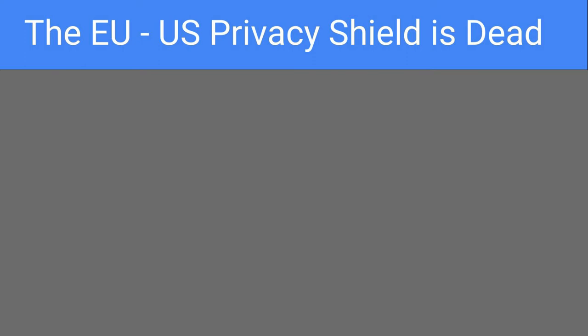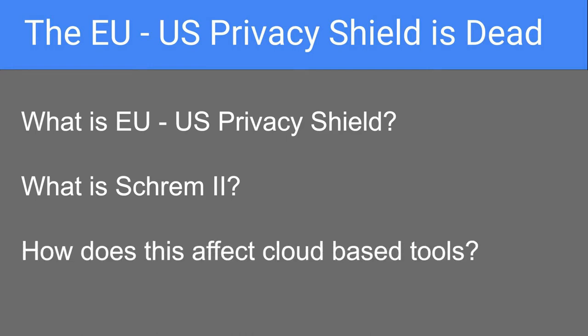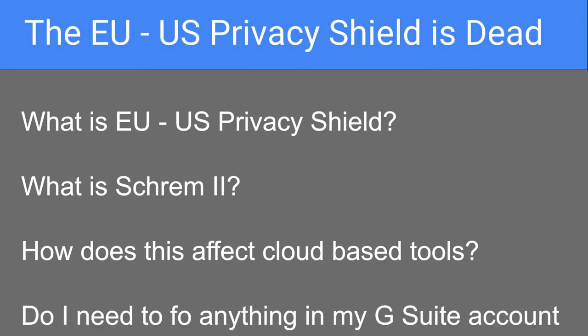I'm going to talk about four key areas: what is the EU-US Privacy Shield, what is Schrems 2 — the nickname given to the ruling from the Court of Justice in the EU — what does this mean for cloud-based tools, and then what do you need to do within your G Suite account if you have one.